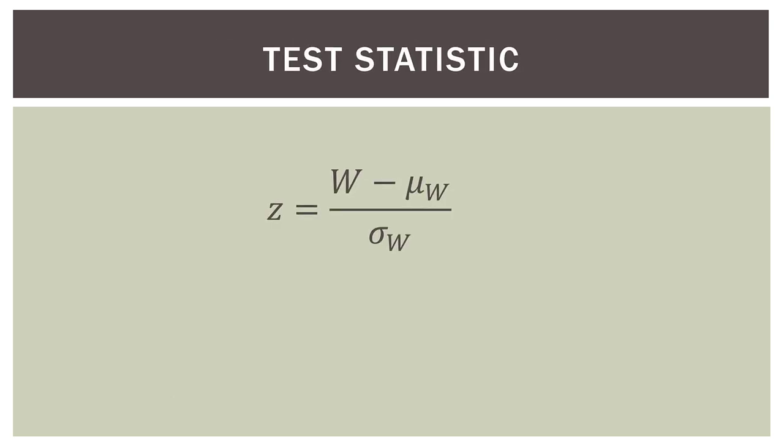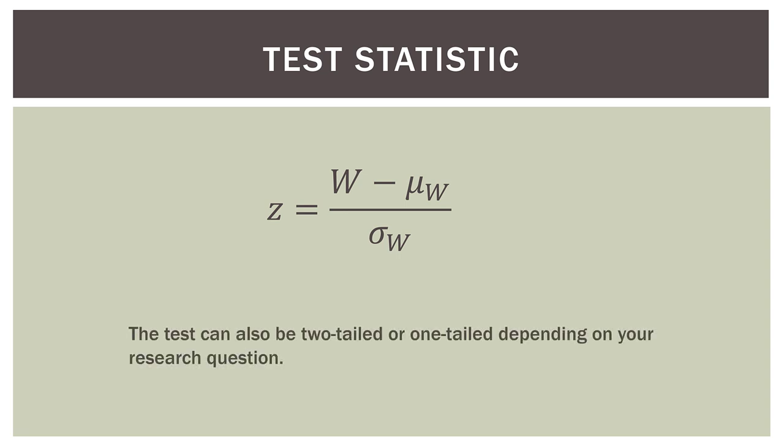The test statistic, or z-score, is the same type of z-score we've been using throughout statistics — it's a measure of how many standard deviations our observed value is below or above our expected mean. It's the difference divided by the standard deviation. We can have two-tailed tests or one-tailed tests depending on our research question, and all are viable in the Wilcoxon rank sum or Mann-Whitney test. So now let's go into Excel, calculate everything, and conduct our hypothesis test.